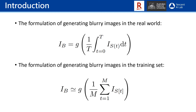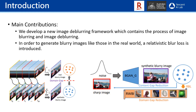On the other hand, in conventional de-blurring methods, the blurry images used in training are often synthesized by approximating an integration step with a simple averaging operation, as shown in the bottom formula. In this paper, we propose a method which contains a learning-to-blur GAN and a learning-to-de-blur GAN module. There are two complementary processes: one module learns to mimic the properties of real-world blurries by generating photometrically realistic blurry images.